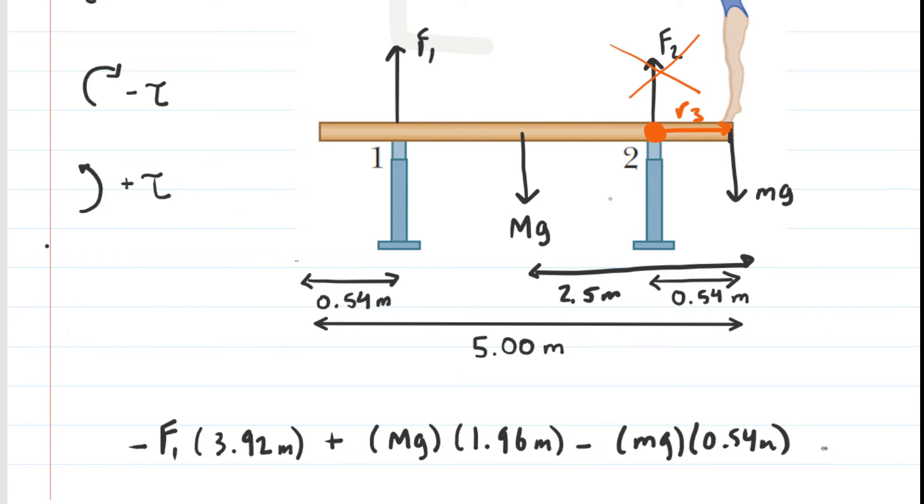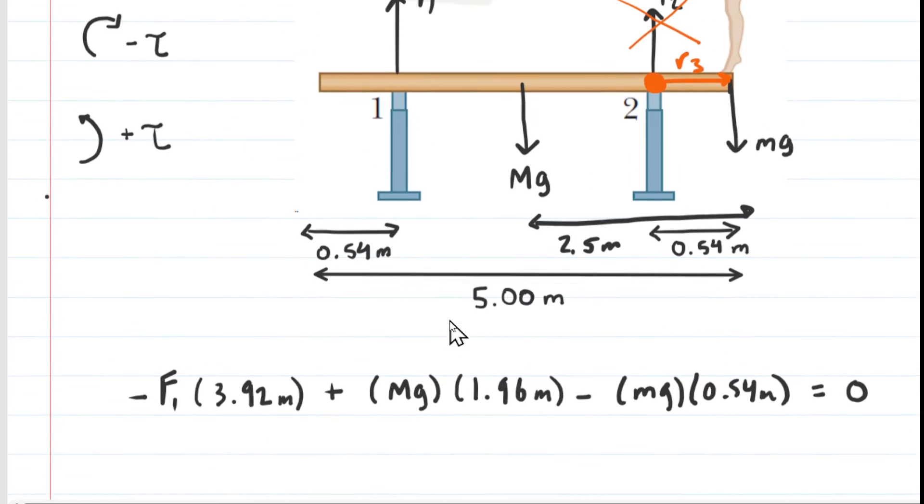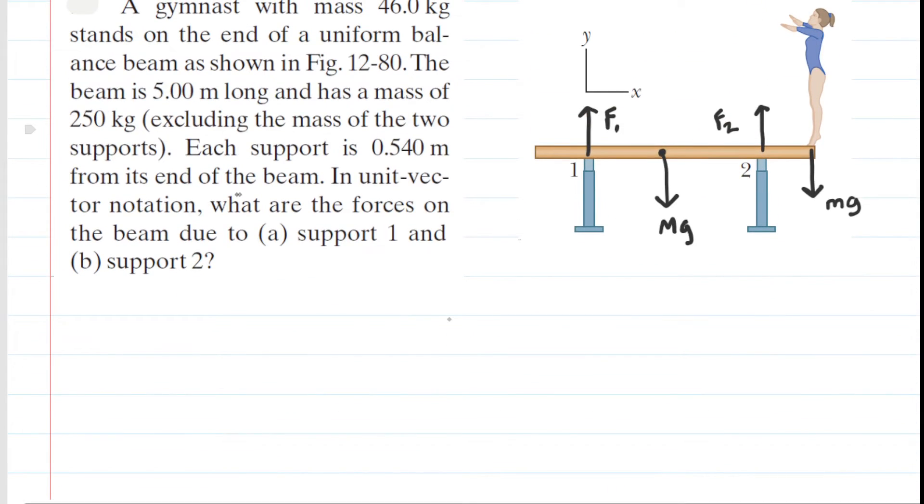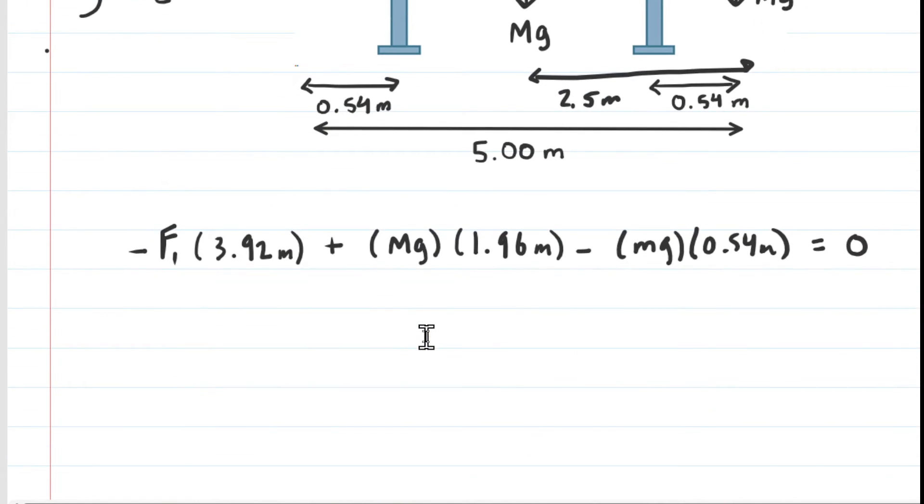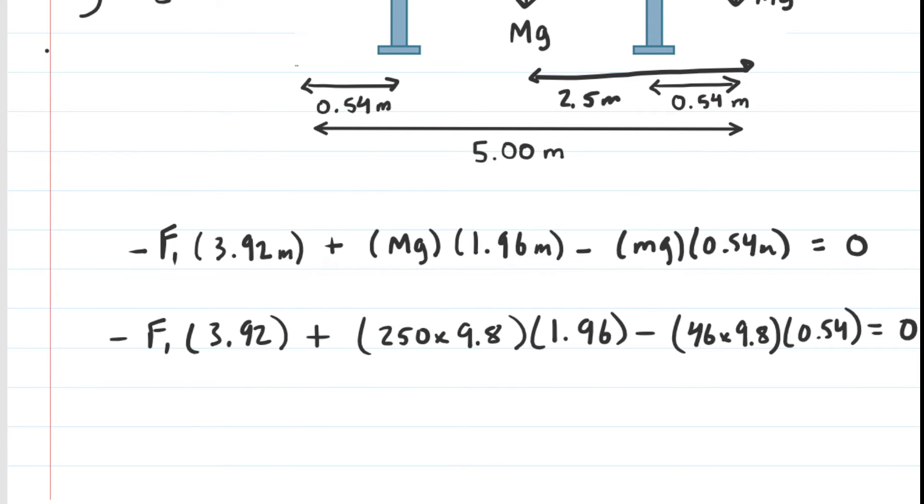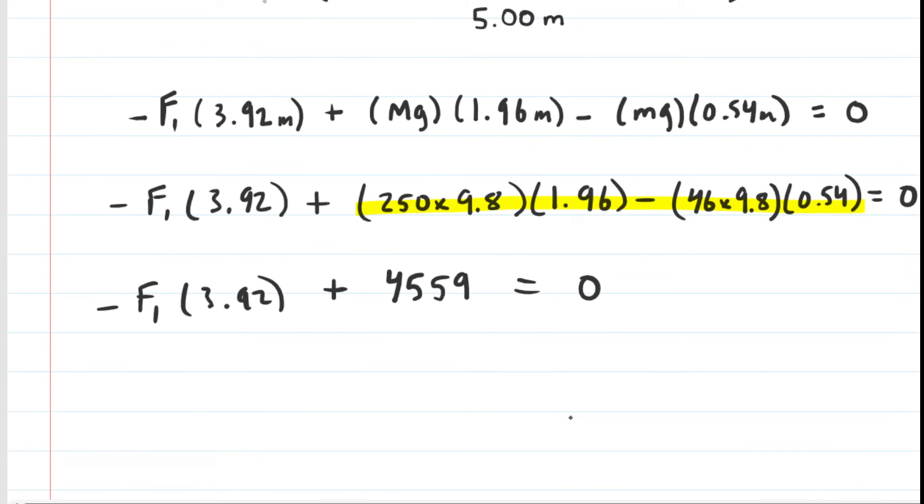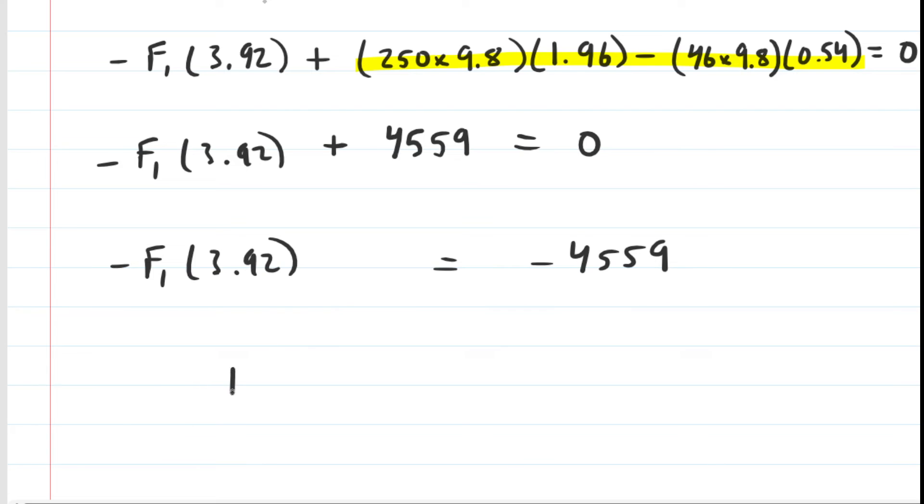Now, the sum of these three torques must equal zero because the beam is in equilibrium. We can go back and retrieve the values of uppercase M and lowercase M. Uppercase M was the mass of the beam, that was 250 kilograms. Lowercase M is 46 kilograms. So we're going to plug those values into our equation along with the value of G, which of course is 9.8 meters per second squared. What you might want to do next is pick up your calculator and punch all of that into the calculator. When you do that, you're going to get about 4,559, and on the other side we have the negative F1 times 3.92.